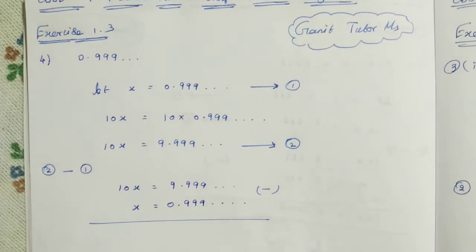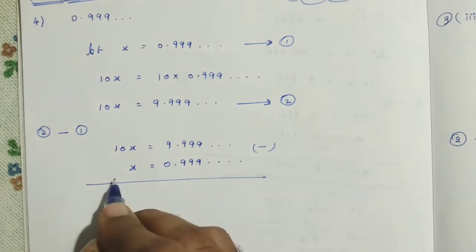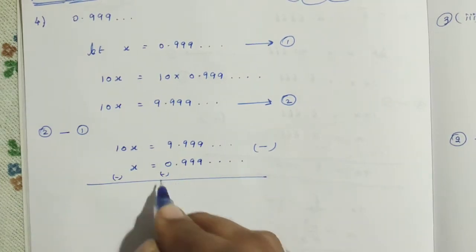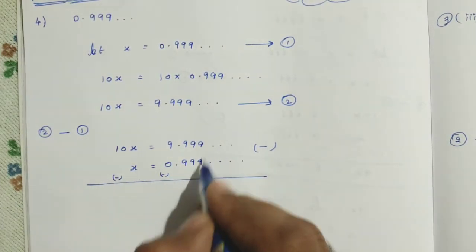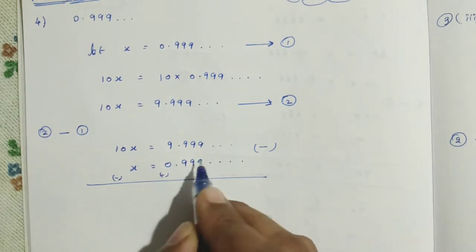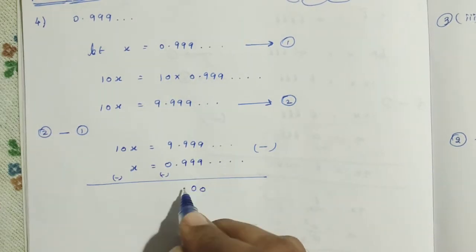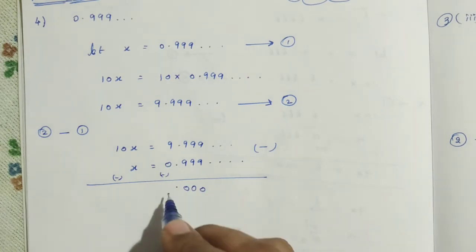Then, as usual, in this subtraction, what we are supposed to do? We can change the sign. So, here minus, here minus. So, 0, 0, 0. 9 minus 9, 0. 9 minus 9, 0. 9 minus 9, 0. Then, 9 minus 0, 9 minus 0. It became a 9.